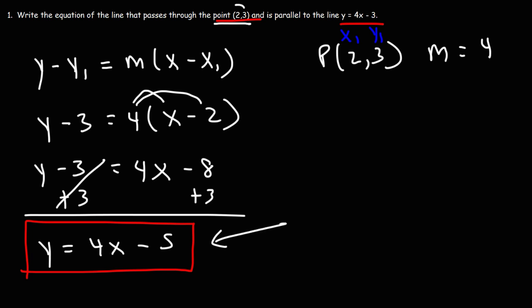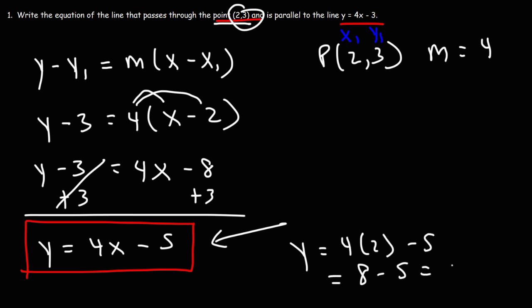This line contains the point (2, 3). If we replace x with 2, we get a y value of 3. Let's check: 4 times 2 minus 5 — 4 times 2 is 8, and 8 minus 5 is 3. When x equals 2, we get y equals 3, so the line contains the point (2, 3). All of the conditions are met with this answer.